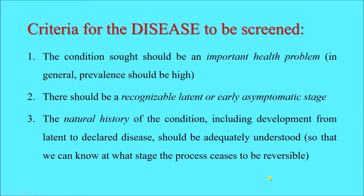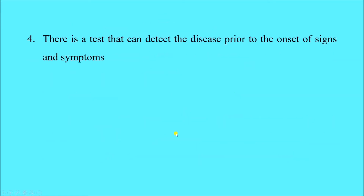The natural history of the disease or condition, including its development from latent to declared disease, should be adequately understood. We must understand how a disease progresses so we can detect it during the asymptomatic stage and initiate management at the earliest possible time. From the concept of lead time, we already know that initiating treatment at an early stage may help avoid some of the permanent damage caused by the disease. That is why understanding the natural history of the screened disease is very important.